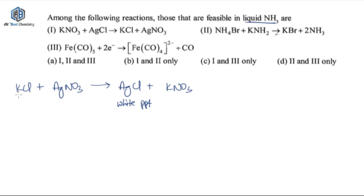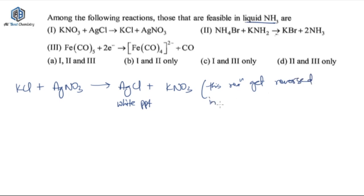This reaction has been asked in CSIR-NET previous year exams — where KCl reacts with a compound to give a white precipitate that disappears when treated dropwise with liquid ammonia. In this question the same reaction is used in reverse: treating KCl with AgNO3 gives AgCl as a white precipitate, but in the presence of liquid ammonia this reaction gets reversed. So this reaction is feasible in liquid ammonia.